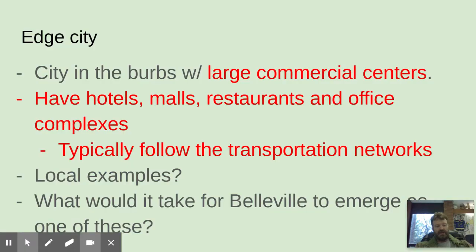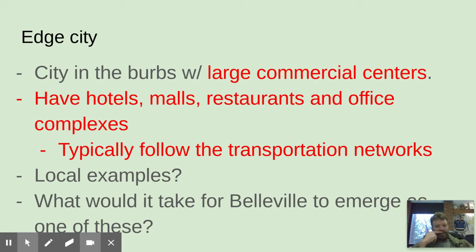An edge city is a suburb that has large commercial centers — hotels, malls, restaurants, and office complexes — typically right along an interstate outside the city. The best example around here is Clayton, Missouri. Clayton has high-rise buildings, all kinds of commercial activity, business headquarters, and a nice downtown area. That is the best example of an edge city.